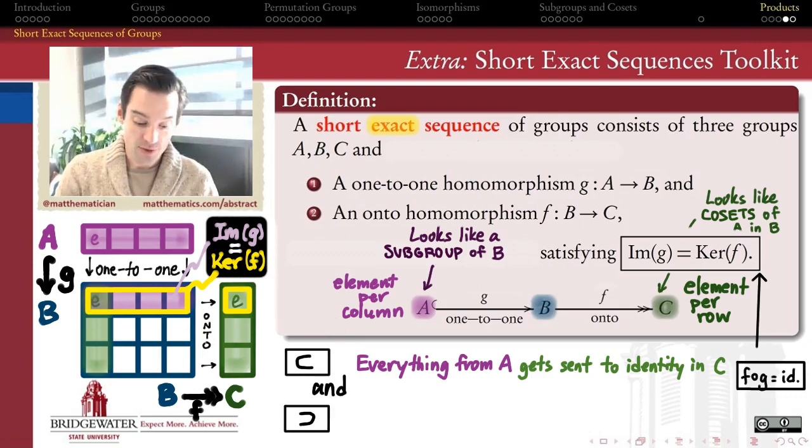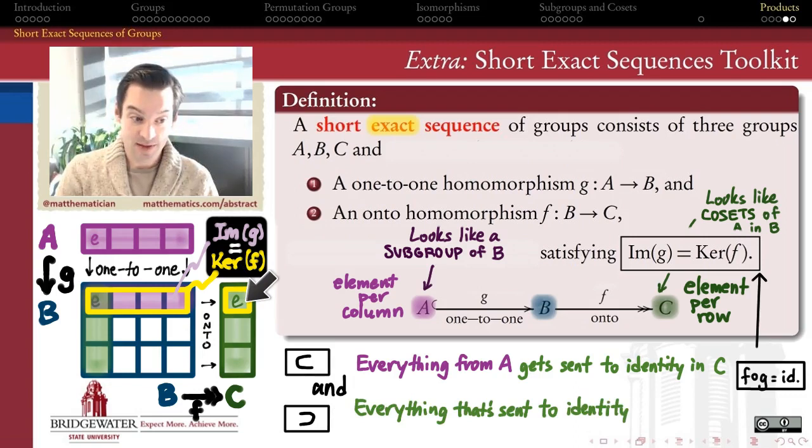But then if the reverse is true, that also means that everything which got sent to the identity in C, so if I look at the pre-image of the identity, that's the kernel, has to have been something which is colored purple because it came from A.